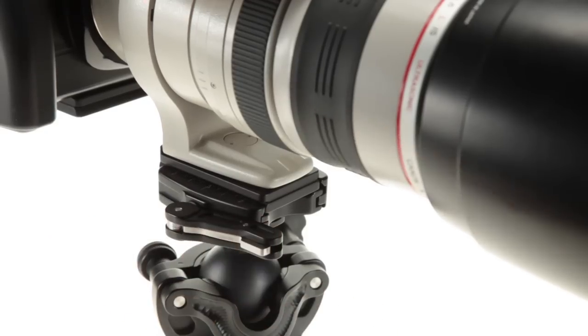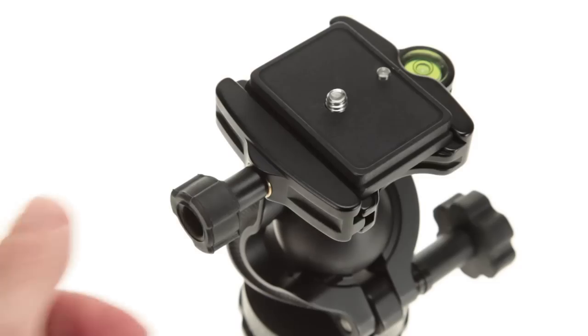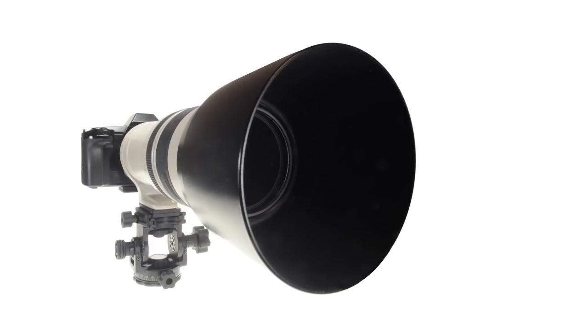This is because most lever-type quick release clamps use a spring to transmit the clamping force to the quick release plate, whereas a knob transmits this force directly. This is usually only an issue with large telephoto lenses.